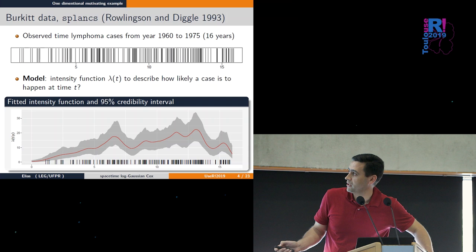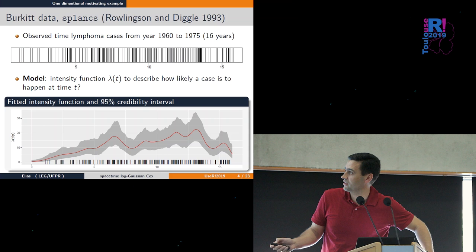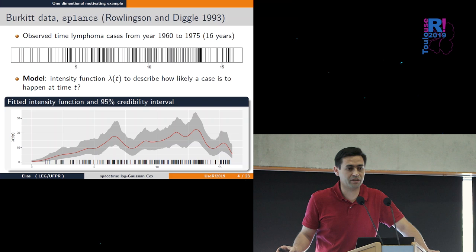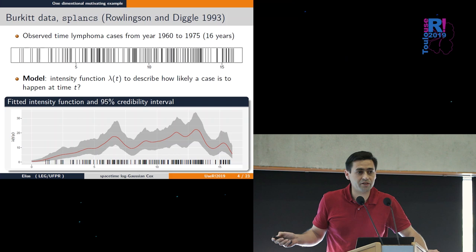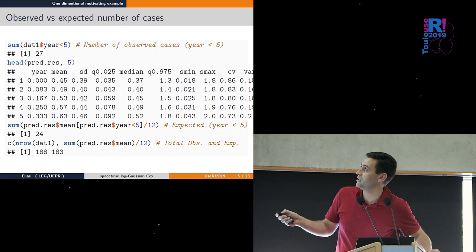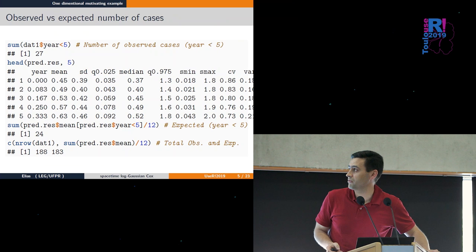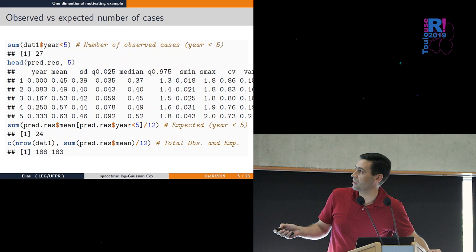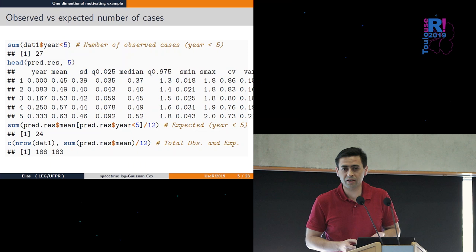If you integrate this function from zero to five years, we'd expect around 25 cases. Comparing with the fitted model, we have 27 observed cases and 24 predicted. For the total time period, we have similar expected and observed numbers. This validates the model is doing well.